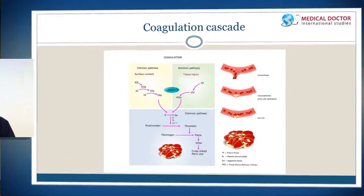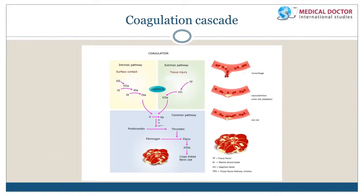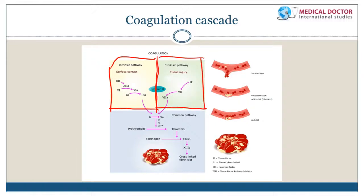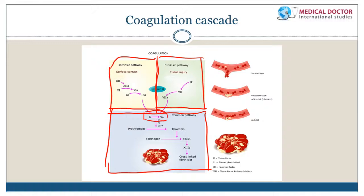Looking at the coagulation cascade diagram, we can see the separation into the intrinsic and extrinsic pathways, both merging at a common point. The merging point is factor 10. Let's review the differences between the intrinsic and extrinsic pathways, their factors, and the endpoint of the common pathway.